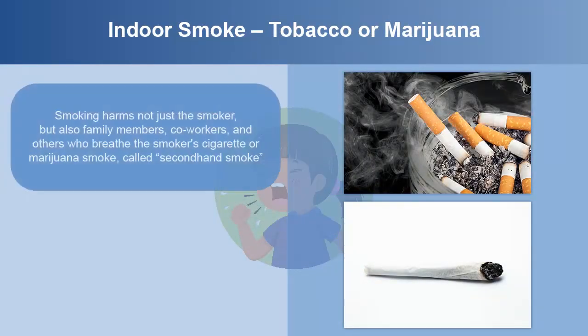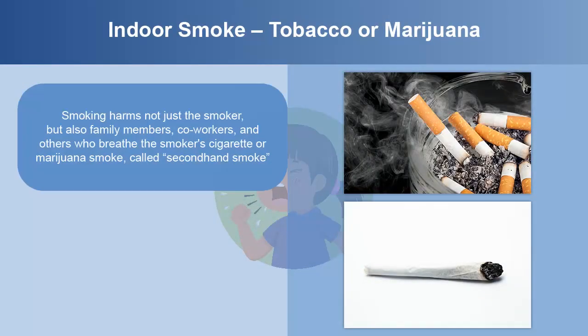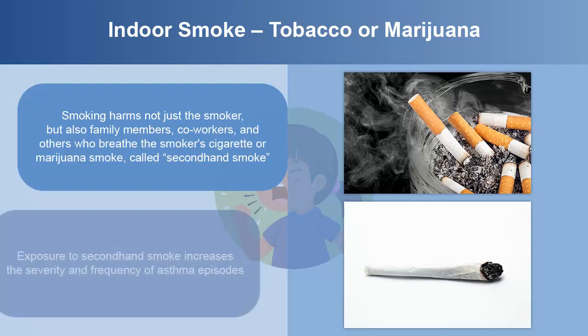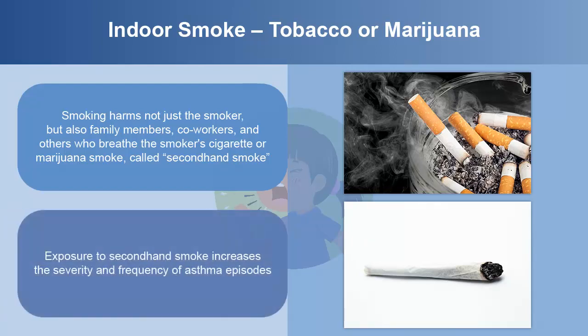Smoking harms not just the smoker, but also family members, co-workers, and others who breathe the smoker's cigarette or marijuana smoke, called secondhand smoke. Exposure to secondhand smoke increases the severity and frequency of asthma episodes.